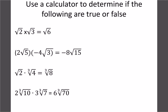Most people find multiplying and dividing a little bit easier than adding and subtracting because it makes more sense. Root 2 times root 3 gives you root 6 — that's definitely true. On your calculator, if you type in 2 root 5 times negative 4 root 3 and get the decimal answer, then check negative 8 root 15, you'll see they're the same. The negative 4 and 2 multiplied give negative 8, and the 5 and 3 multiplied give 15.